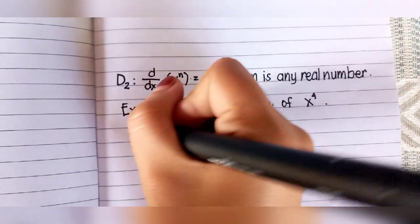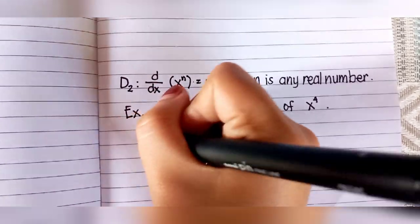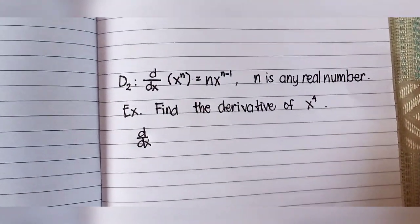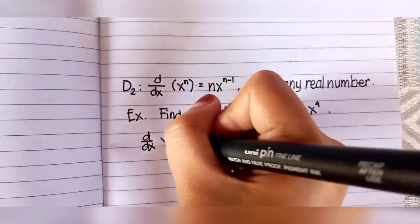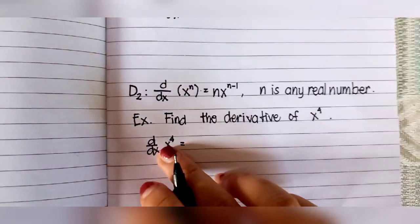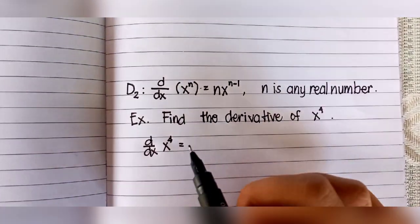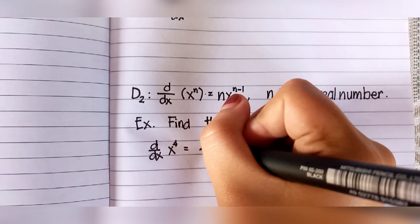Since our variable is X, it will become d/dx. If you use Z, it will become d/dz, but you use X so it will become d/dx of X raised to 4.